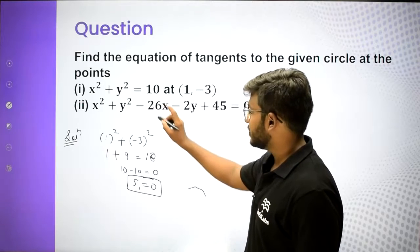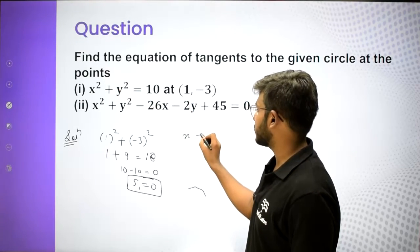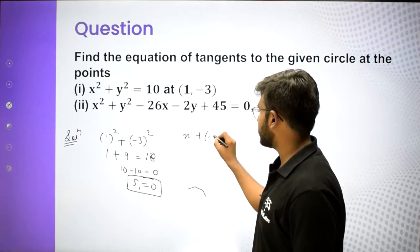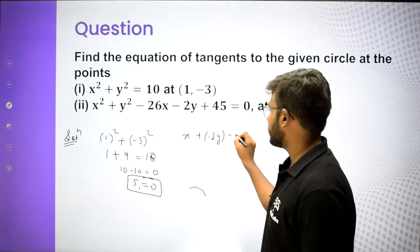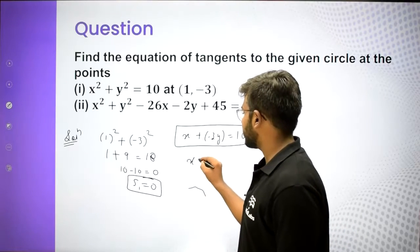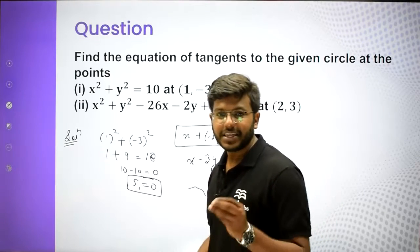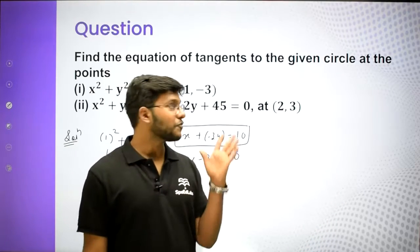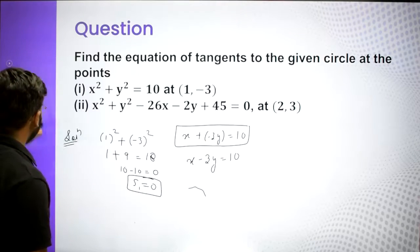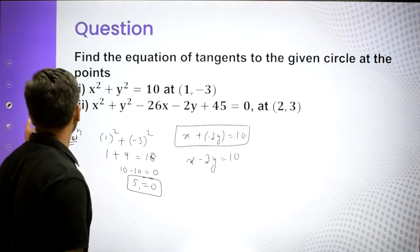Since the point lies on the circle, the equation of tangent will be T equal to 0. x² becomes x·x1, so 1·x = x. y² becomes y·y1, so -3·y = -3y. The constant remains as it is, giving x - 3y = 10. Within 10 seconds you can give the answer. Remember, the point must always lie on the circle for this method.